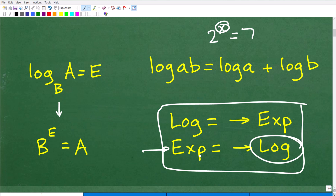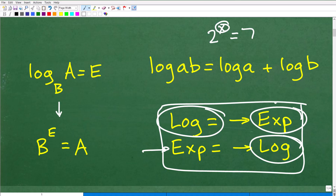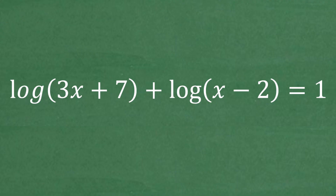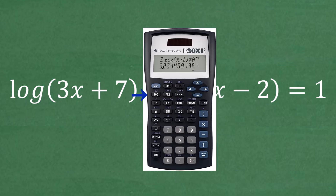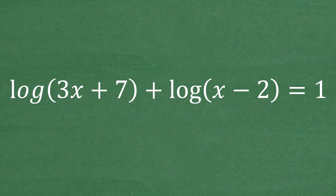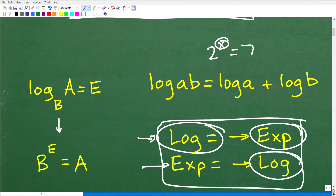Exponential functions and logarithmic functions are inverses of one another. So when you're dealing with a logarithmic equation, you're going to be using exponents and powers. When you see LOG or LN — the natural log — you should be thinking exponents and exponential functions. And when you see an exponential equation, you should be thinking logarithms. You're always thinking about the inverse.